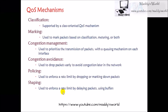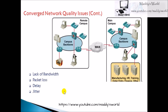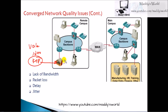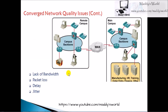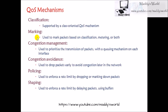In a converged network with voice, video, and FTP traffic, FTP may utilize almost all available bandwidth, causing voice traffic to be delayed or dropped. To overcome this, we implement QoS mechanisms that give priority to specific traffic. The major problems are lack of bandwidth, packet drops, delay, and jitter — and QoS mechanisms address all of these.